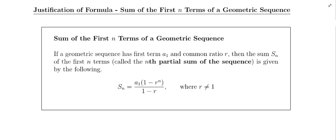I'll read through the formula again in the box and then show you the justification. If a geometric sequence has first term A1 and common ratio R, then the sum Sn of the first n terms — called the nth partial sum of the sequence — is given by: Sn equals A1 times 1 minus R raised to the nth power, all divided by 1 minus R.